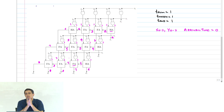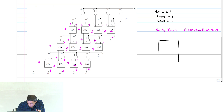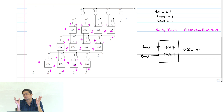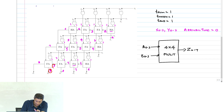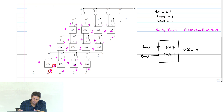Now, what is the critical path of this block? You have to pick the output with the maximum arrival time. For this 4×4 multiplier block, inputs are A0 to A3, B0 to B3, and outputs Z0 to Z7. The output with maximum arrival time is Z6 or Z7. Tracing back, there are multiple critical paths all with the same delay.